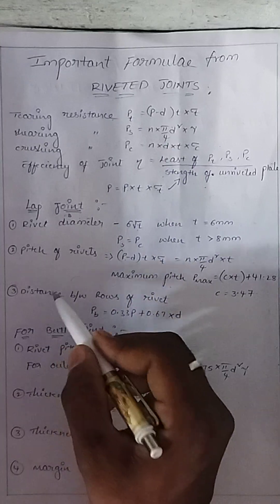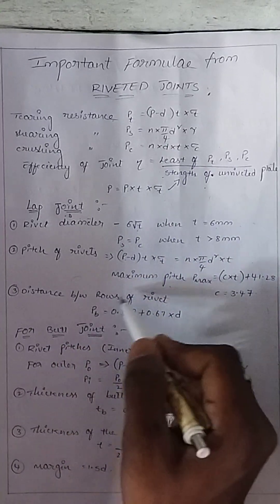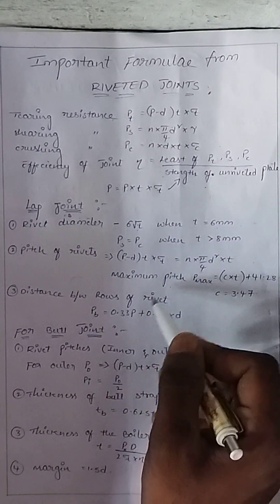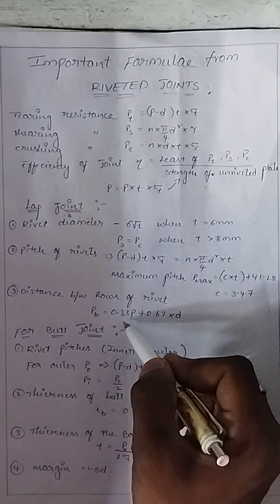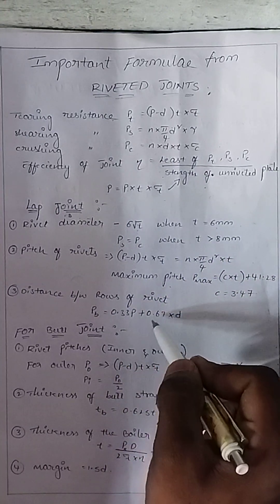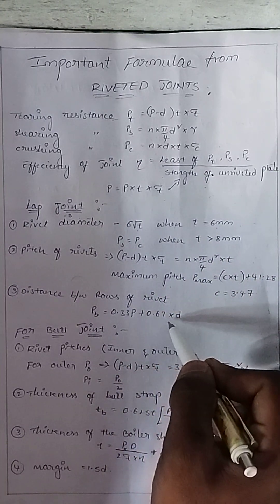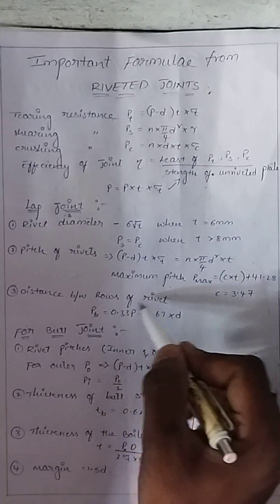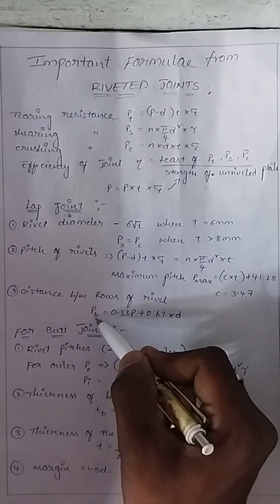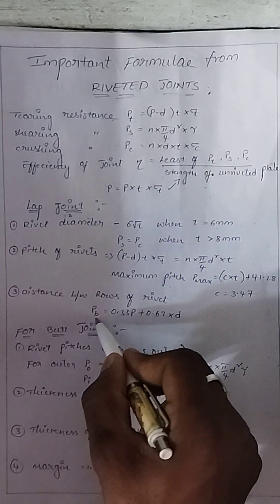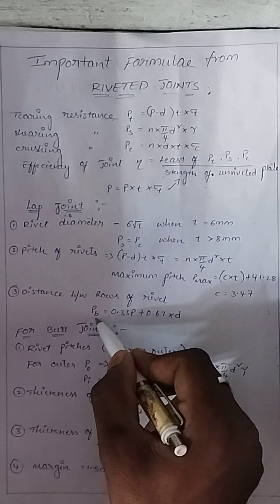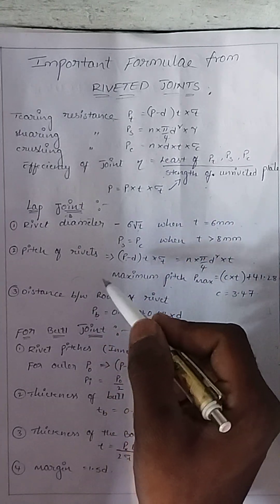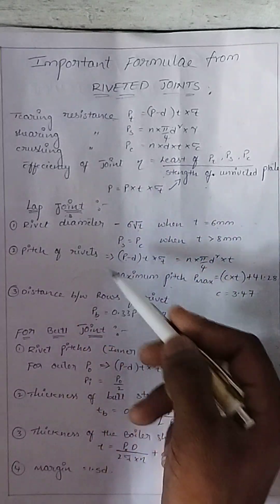The third formula for lap joint is the distance between rows of rivets. The formula is: Pb equals 0.33P plus 0.67B. These are the three important formulas from lap joint.